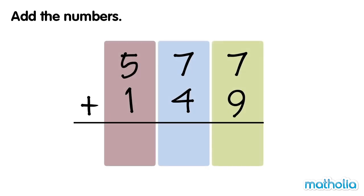Add the numbers. Let's find 577 plus 149. Start by adding the ones. 7 ones plus 9 ones equals 16 ones.